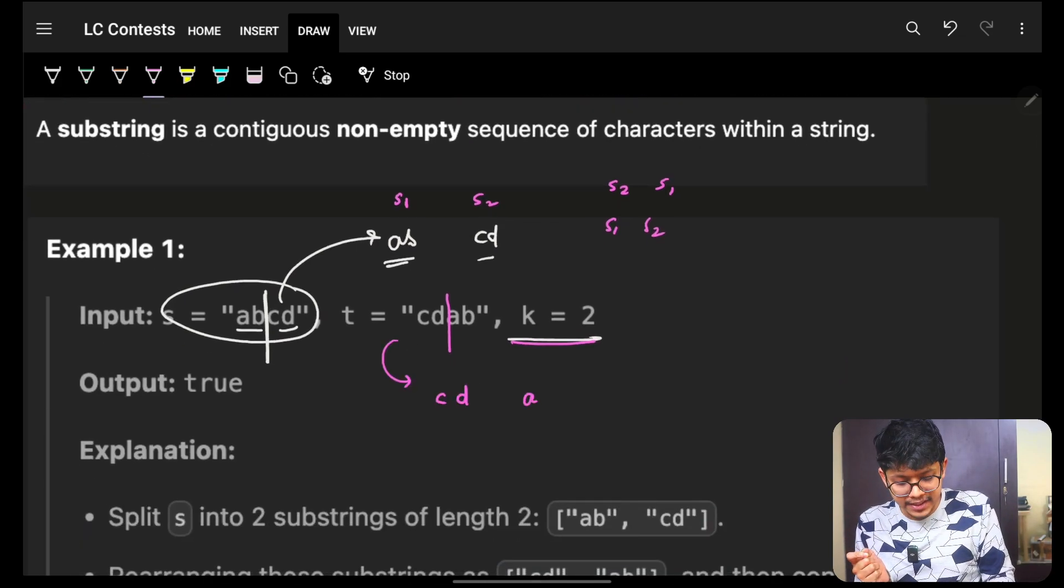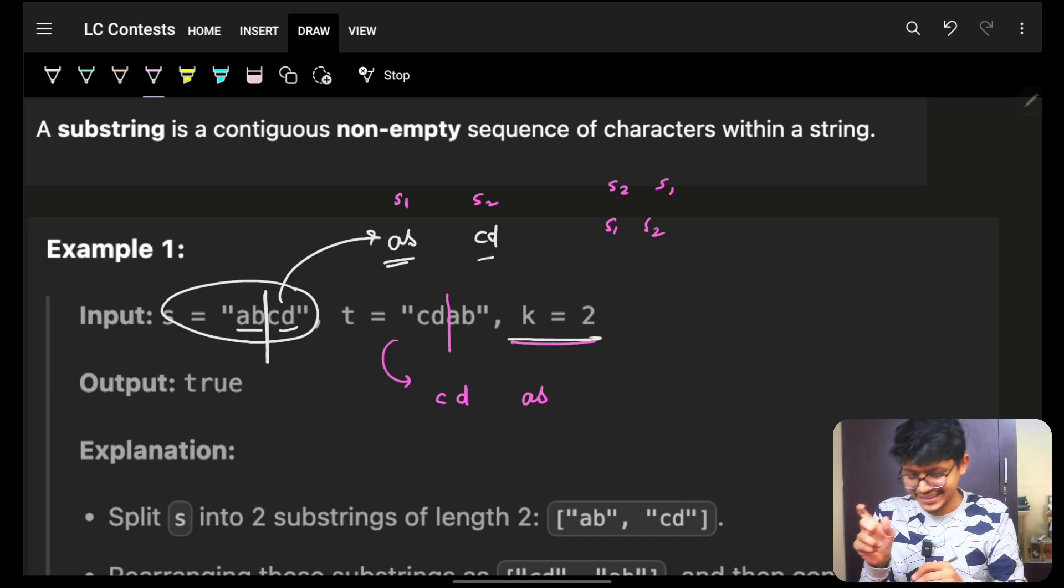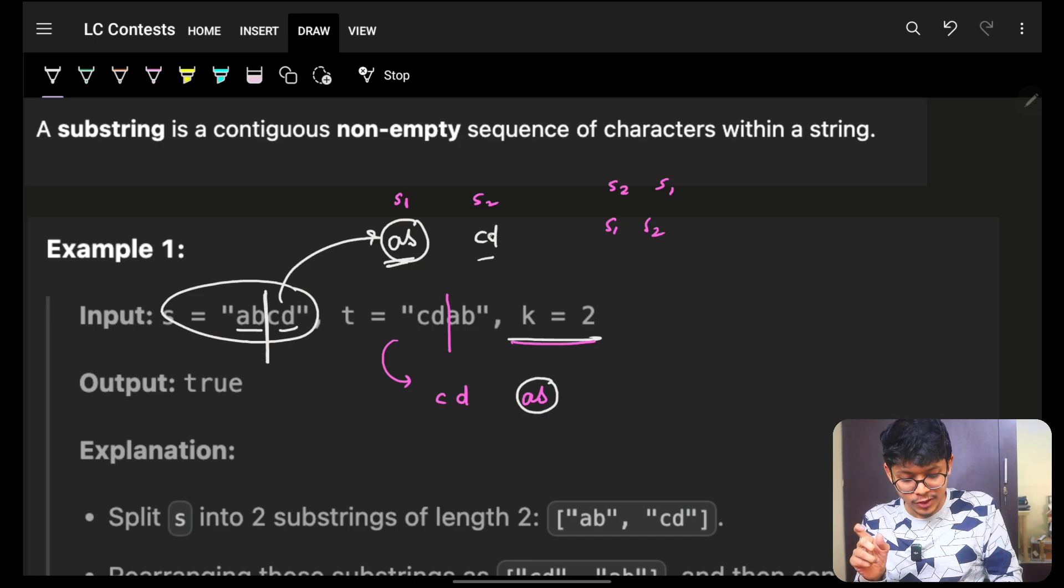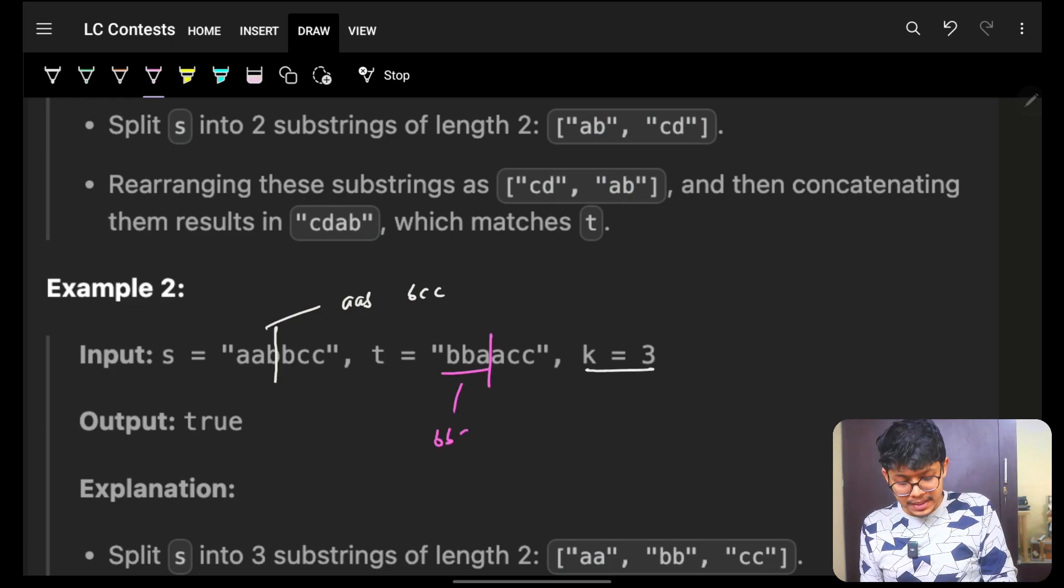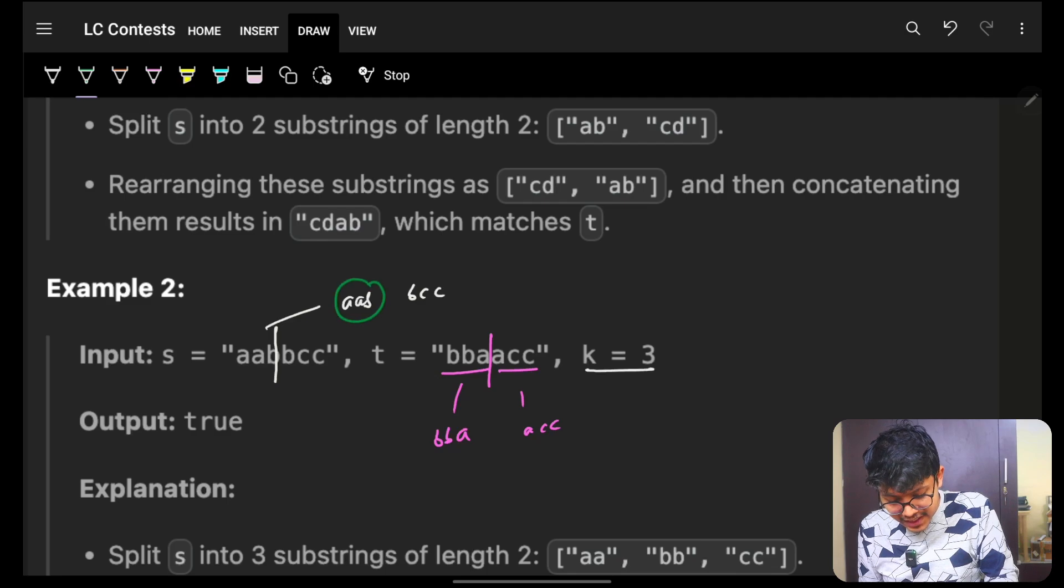So I will get cd, I will get ab. Now, my only task is that do I have ab? Yes, I have. Do I have cd? Yes, I have. Okay, it is possible. Same way, I will split it here by a factor of three. It will be bba. It will be acc. Do I have ab? No, answer is false.